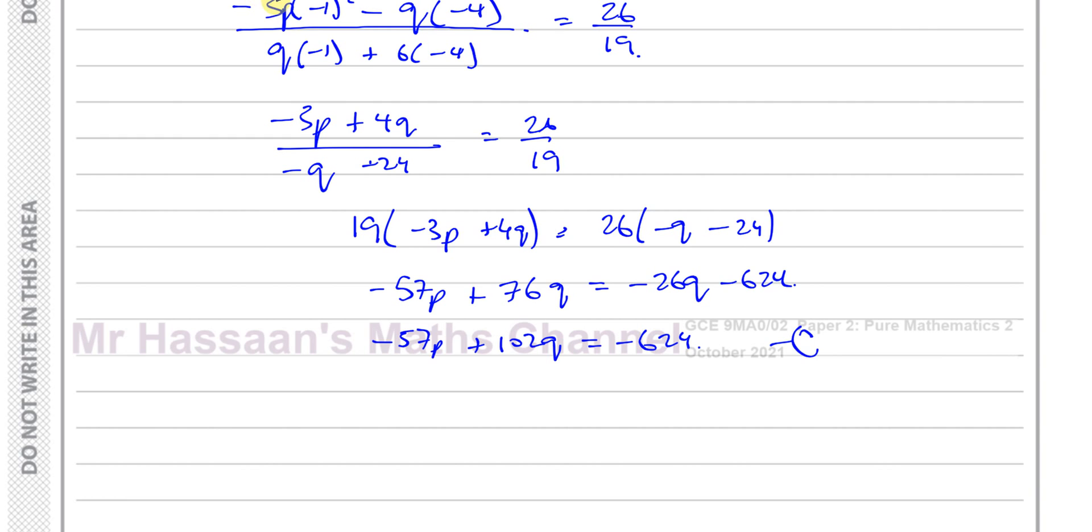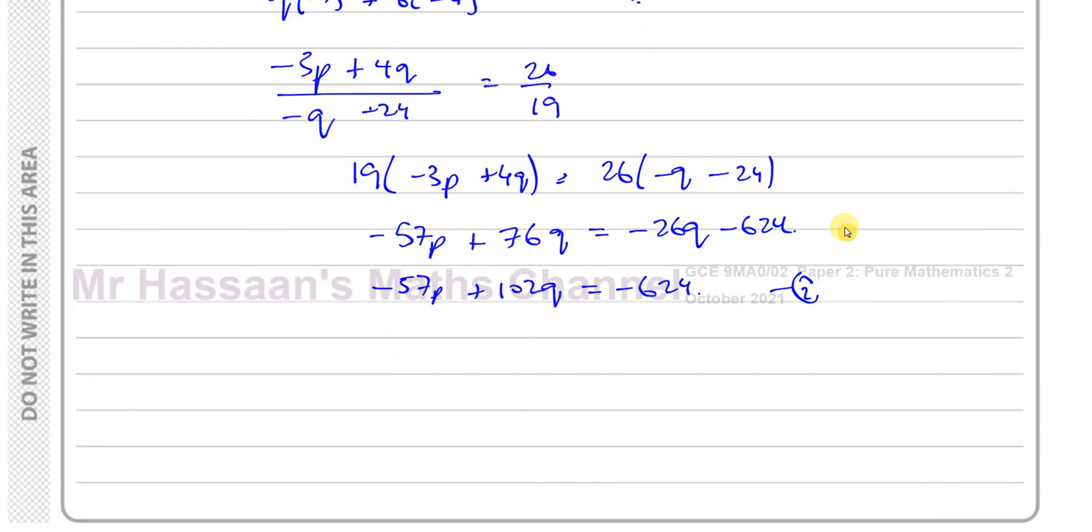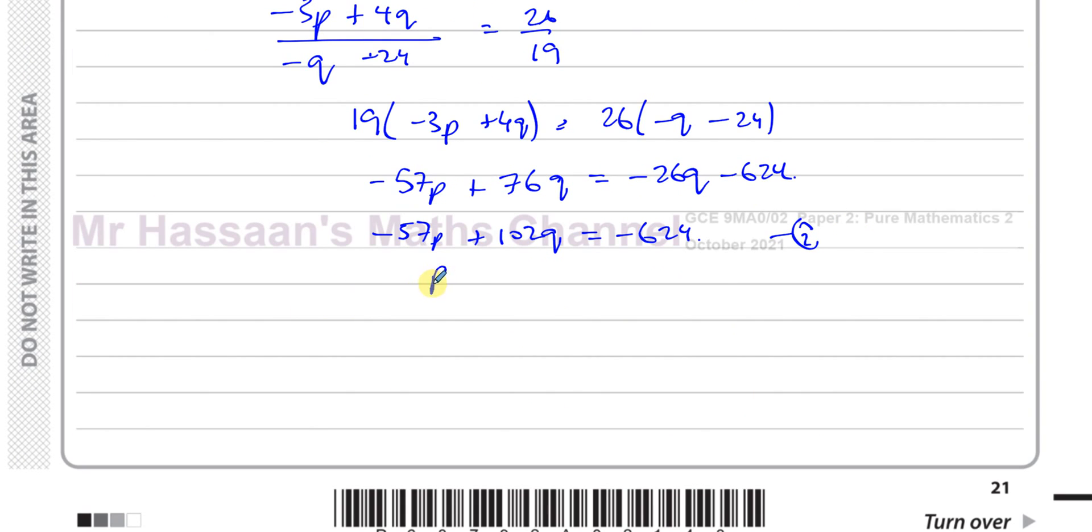So we have two equations now. We have equation from up here which was from the point lies on the line, which is p - 4q equals 22. So I guess to solve this it's probably easy to use some sort of substitution. p is equal to 22 + 4q. So I have -57 times (22 + 4q) + 102q is equal to -624.